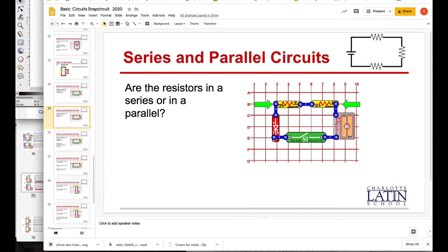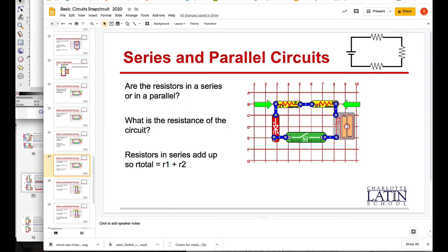Are the resistors in series or parallel? I want you to think about that. In this case, they're in series. They're lined up one after each other. What is the resistance of the circuit? Well, believe it or not, it adds up. If you have R1 and R2, R1 is 100 ohms and 1k would be 1,000. So this is 1,100 ohms. So resistance, LED goes down. Resistors in series add up. So R total equals R1 plus R2.